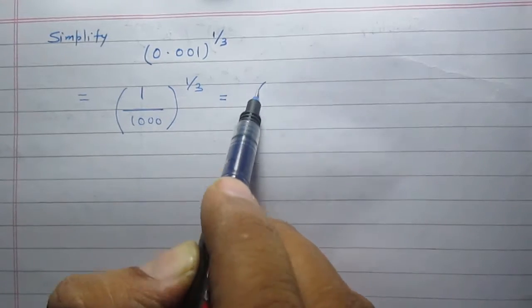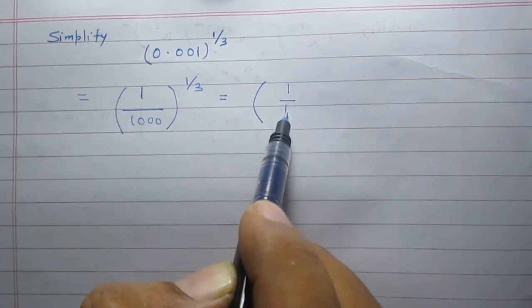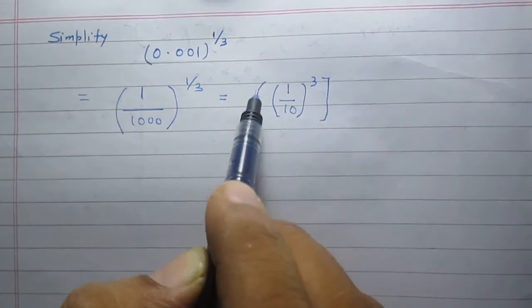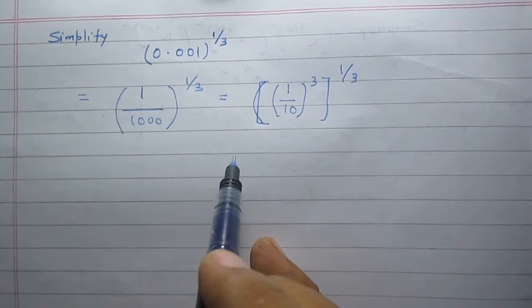1 upon 1000 is 1 by 10 whole cube, then raised to the power 1 by 3.